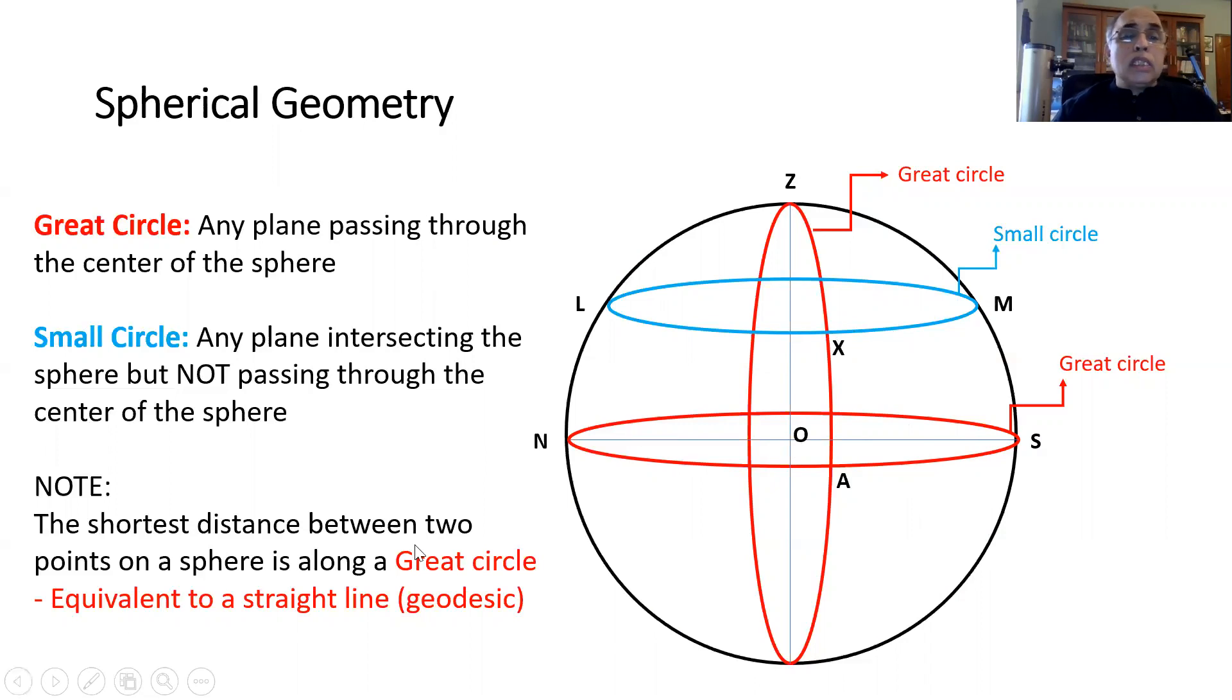The shortest distance between two points on a sphere is along a great circle. So great circles are equivalent to straight lines on a sphere which are also called the geodesics.